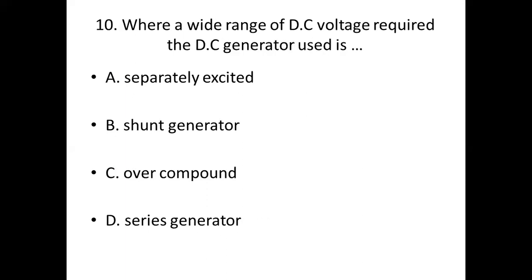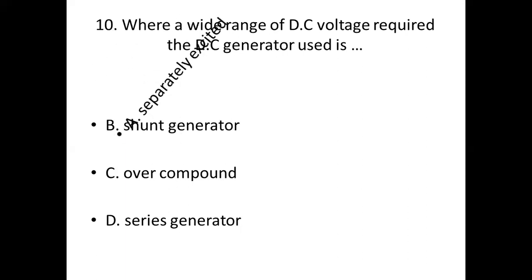Tenth bit: Where a wide range of DC voltage is required, the DC generator used is dash. Option A: Separately Excited. Option B: Shunt Generator. Option C: Power Compound. Option D: Series Generator. Answer — Option A: Separately Excited.